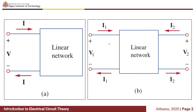Now for a two-port network, we have port 1 which has V1 and I1, and port 2 which has V2 and I2. There are several parameters with which we can represent a two-port circuit: Z parameters, Y parameters, hybrid parameters, transmission parameters, and others.